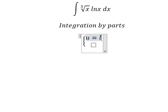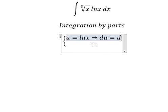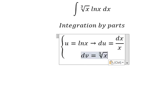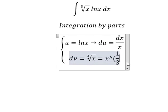We have u equals ln(x), so the derivative is du = dx/x. For dv, we have this one. We change this into x to the power of 1 over 3.